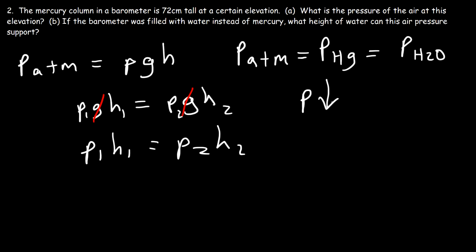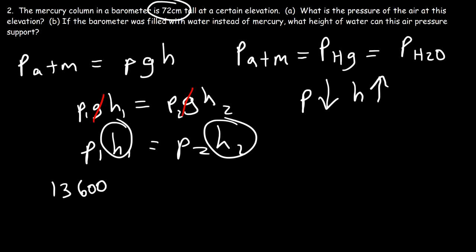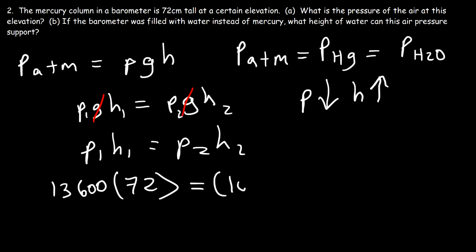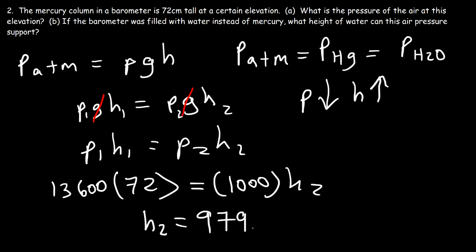For a substance with lower density, we need a greater height to have the same mass, which exerts the same weight force and equals the same atmospheric pressure. The density of mercury is 13,600; H_1 is 72 centimeters; the density of water is 1,000; and H_2 is what we solve for. So H_2 equals 13,600 times 72 divided by 1,000, which is 979.2 centimeters, or 9.792 meters when divided by 100.